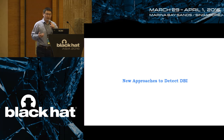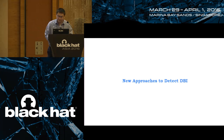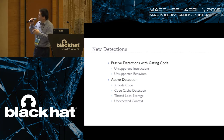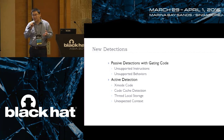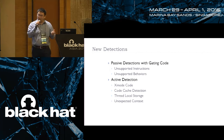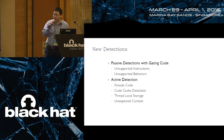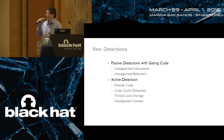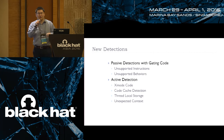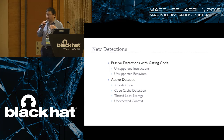Today we want to talk about some new detection methodologies that we discovered, and share them with the community to see how we can detect DBI utilities. We have two different approaches: passive detection with gating code, and active detection. The basic idea for passive detection is you can write some code that runs correctly in native mode, but if you run it in a DBI environment, DBI just crashes. With active detection you can actively determine which environment you are in, and even identify which DBI is running.